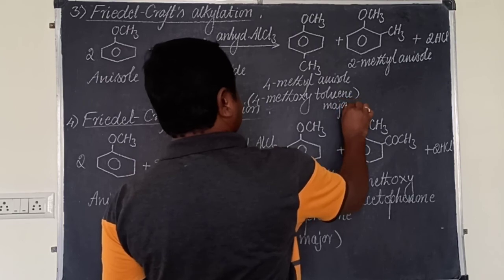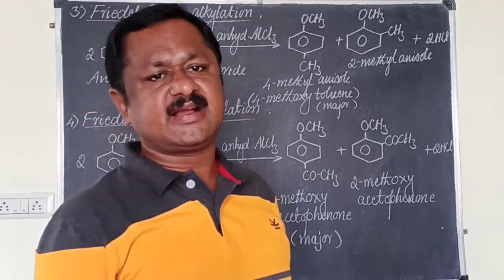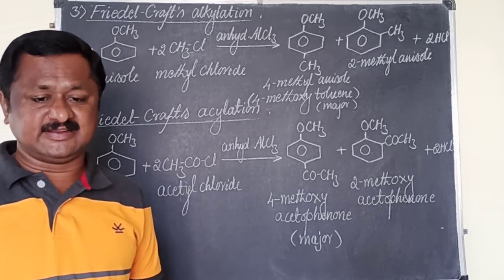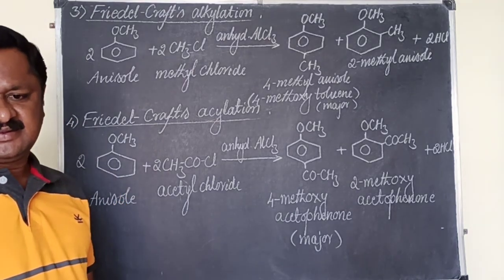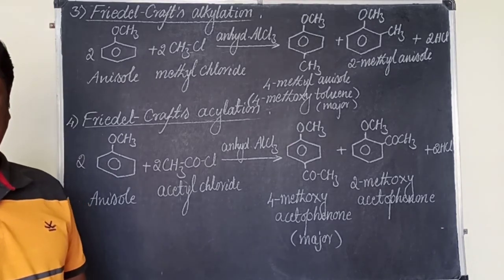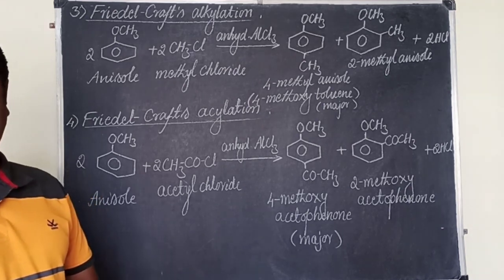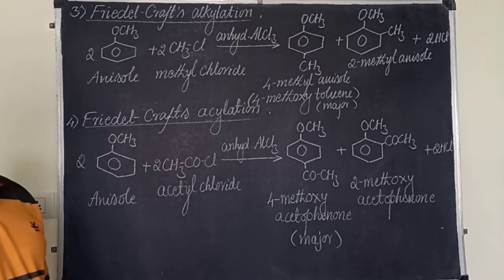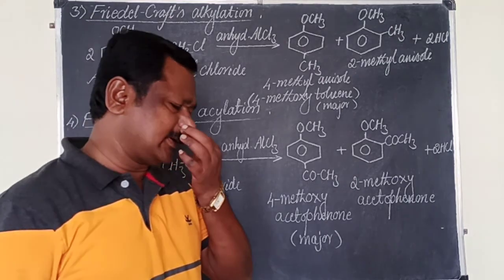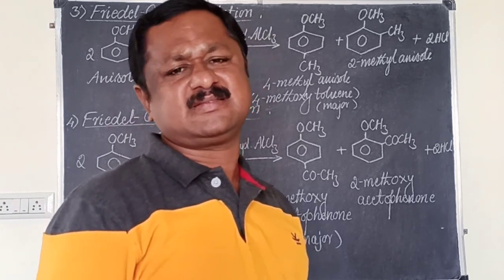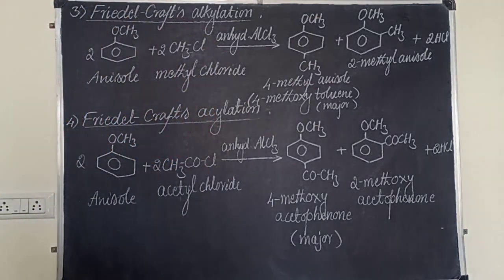The major product is 4-methoxyacetophenone, named as an aromatic ketone with the methoxy group at the fourth position. These are all the ring substitution electrophilic reactions of aromatic ethers like anisole. Finally, the uses of ethers: diethyl ether is used as a refrigerant, as a solvent for oils, gums, and resins, and as a solvent in organic reactions. This completes the chapter on ethers and the full topic of alcohols, phenols, and ethers.